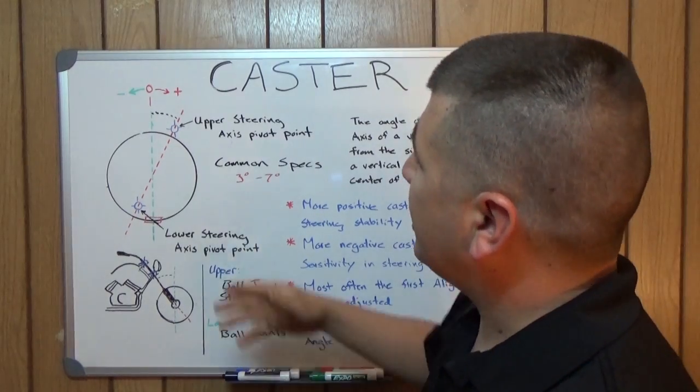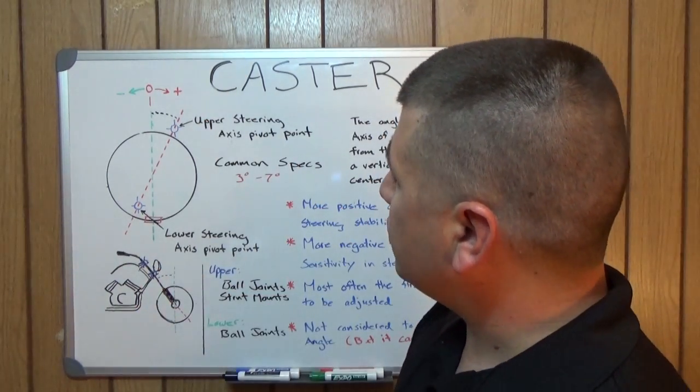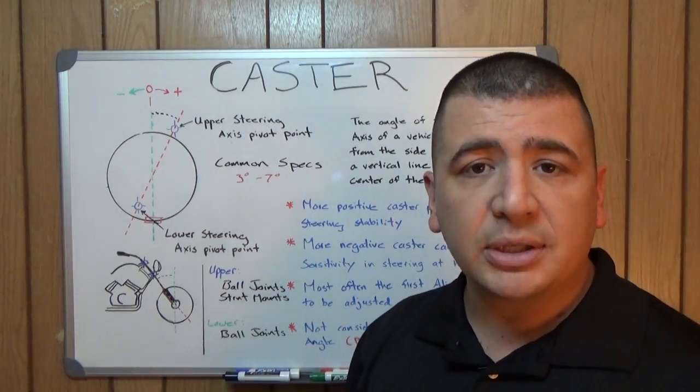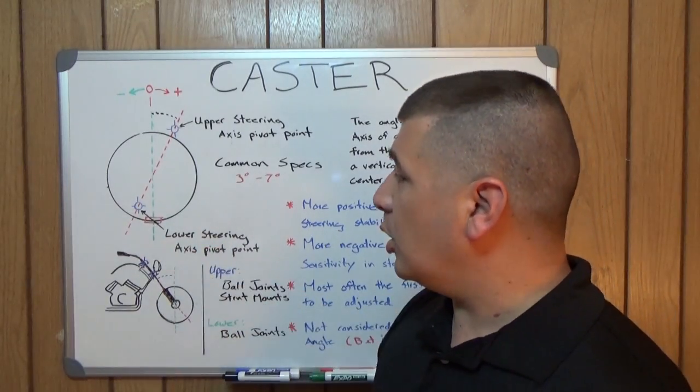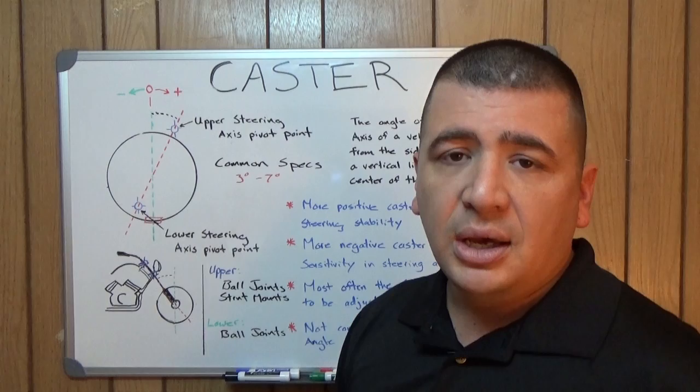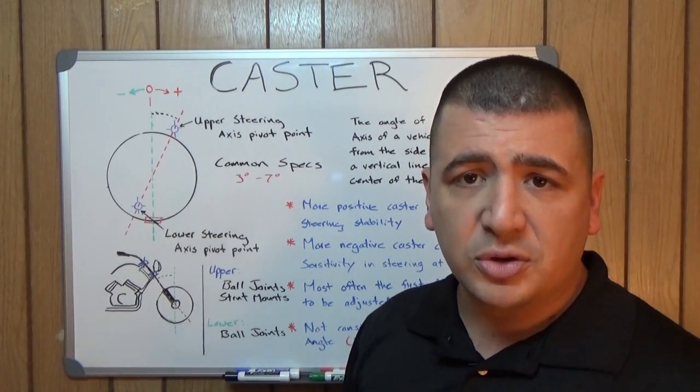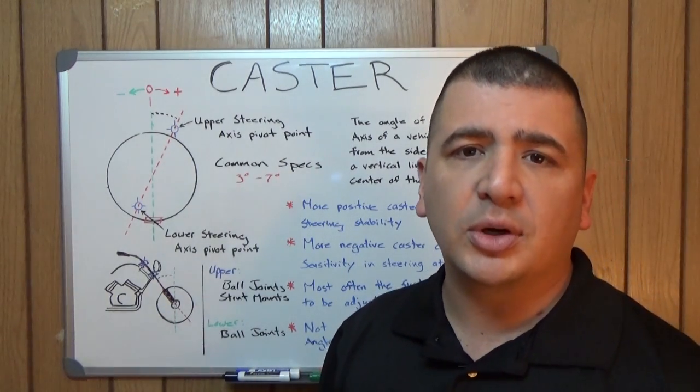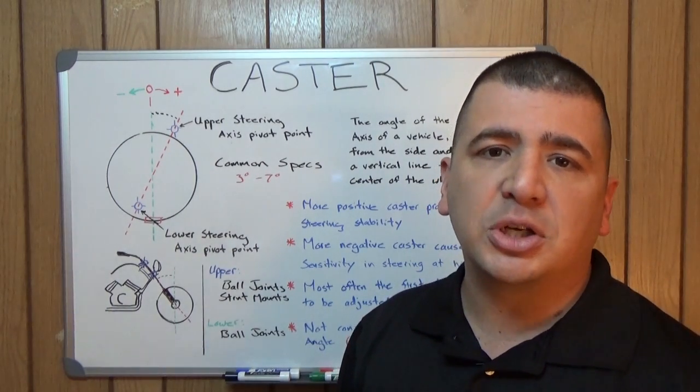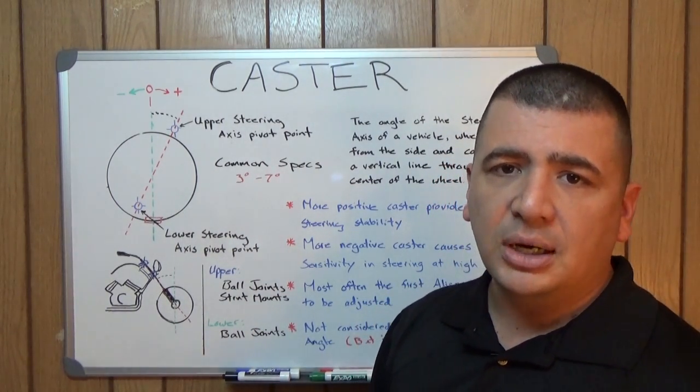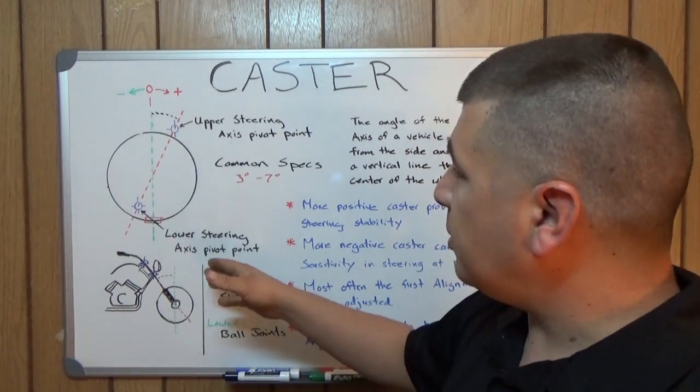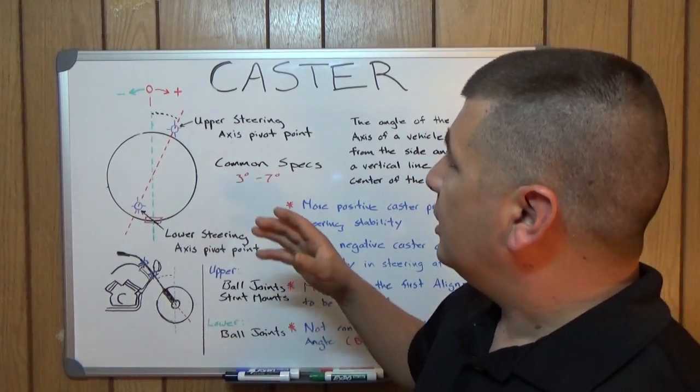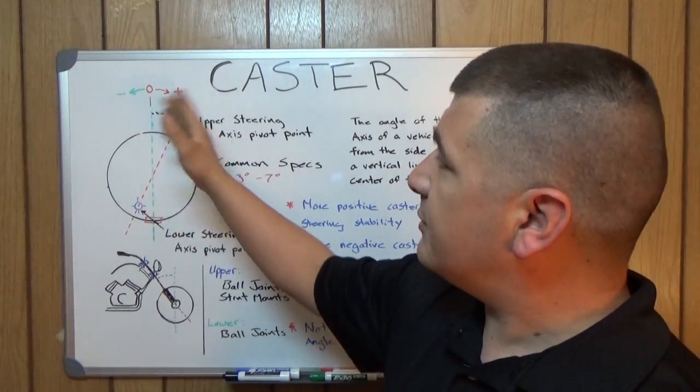Now our steering axis, we get this line by drawing through the upper and lower steering pivots. Our upper steering pivots are typically going to be ball joints or upper strut mounts and our lower steering pivots are almost always going to be ball joints. But for the most part, your lower steering axis is just going to be a lower ball joint.